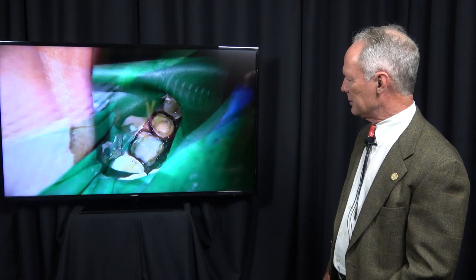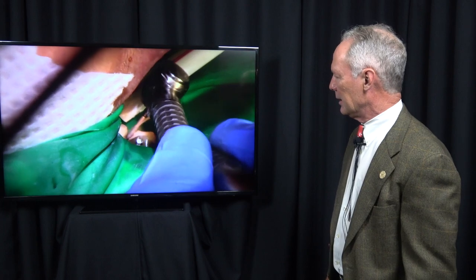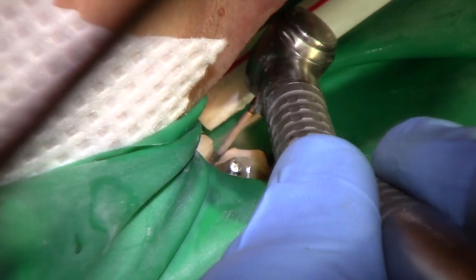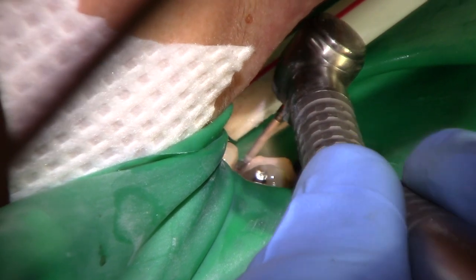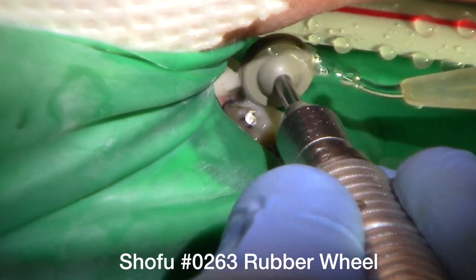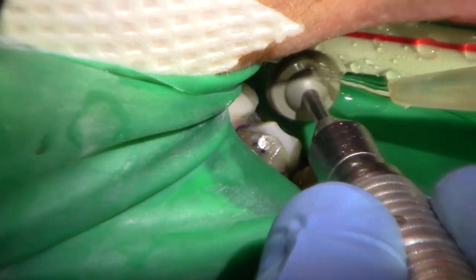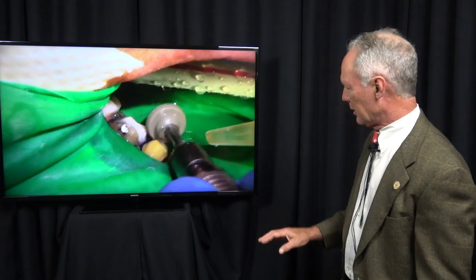The composite build-ups are in place, and I'm going to come back and prep those, blend them into the crown preparation with my chamfer and flame-shaped diamonds. Then, I'm going to polish it with the Shofu rubber wheel. You don't have to do that, but I just want to be sure I don't have any sharp line angles.